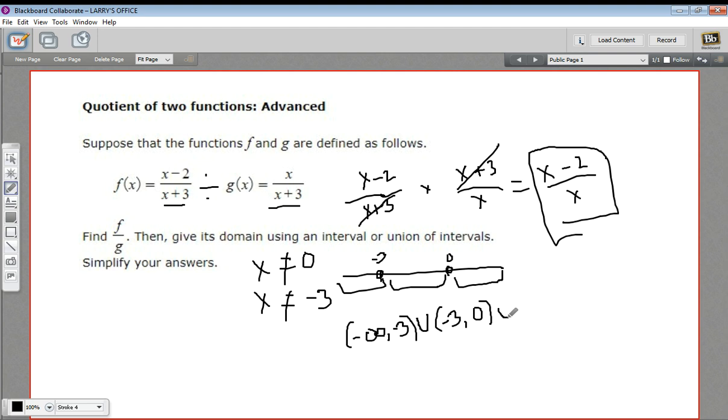And then we have zero. Again, not including that value, that value up to positive infinity. And of course, we don't include negative infinity or positive infinity, because there's no actual value we can state for that. So this is the domain of this quotient of functions. And that is how to determine what a quotient of functions is.